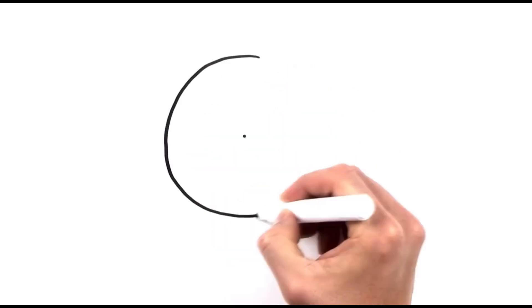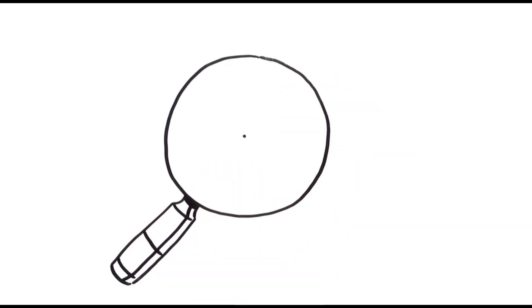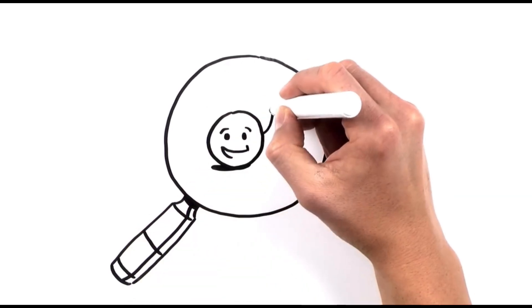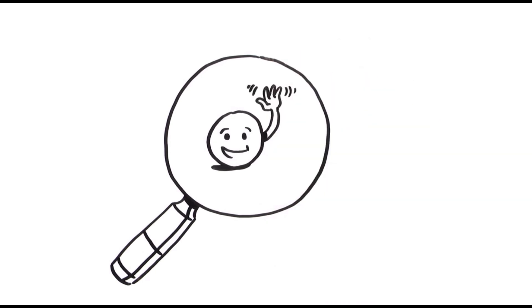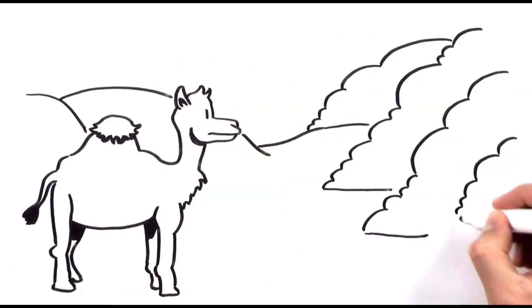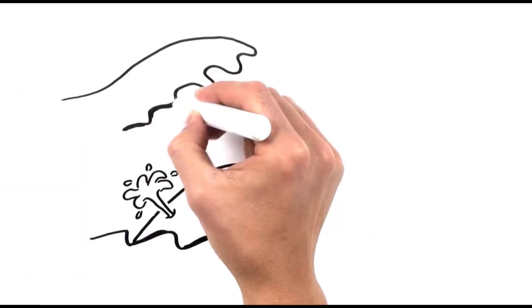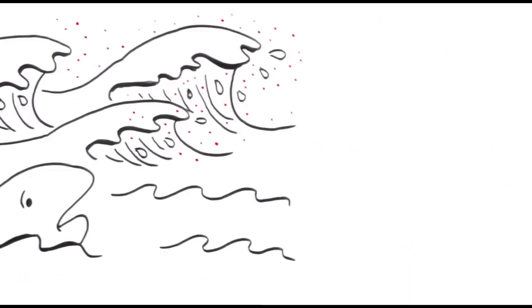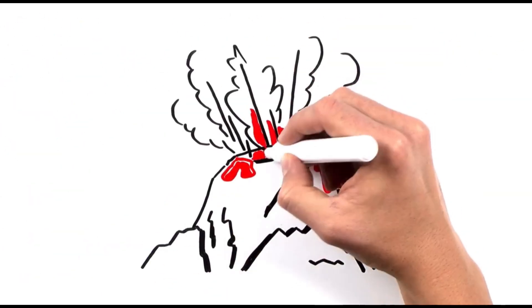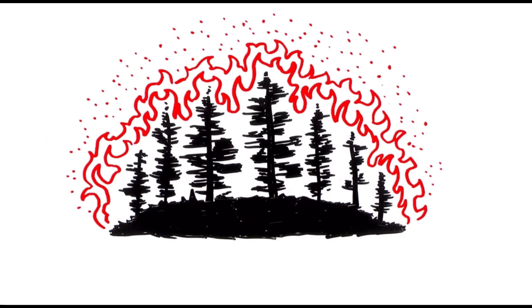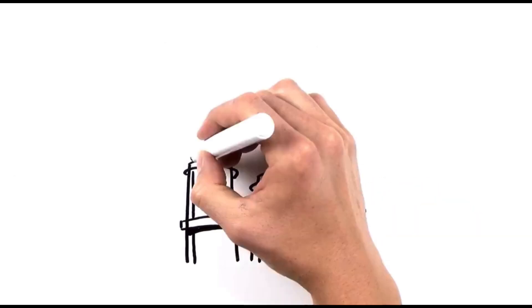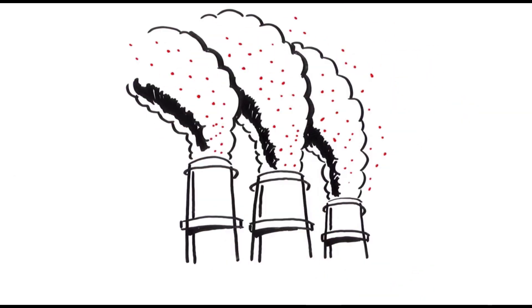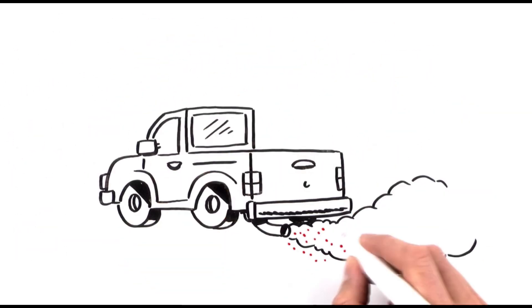This is an aerosol particle. In real life, you could barely see it — it's just a little speck suspended in the atmosphere anywhere from a few days to several years. It could be dust from a desert or salt from ocean spray. It could have been blasted out of a volcano or created during a forest fire. It might have flown out of a factory smokestack or a truck's tailpipe.